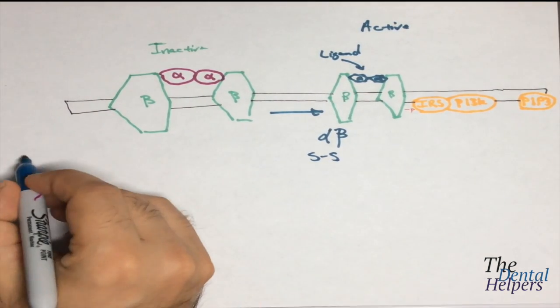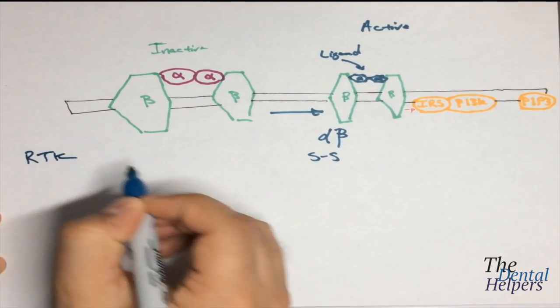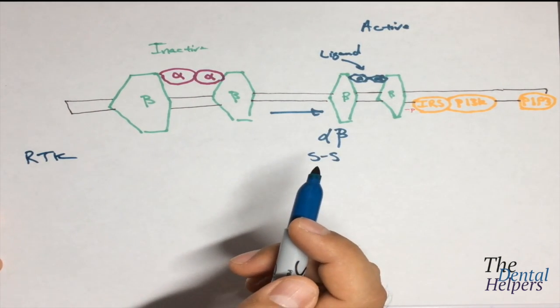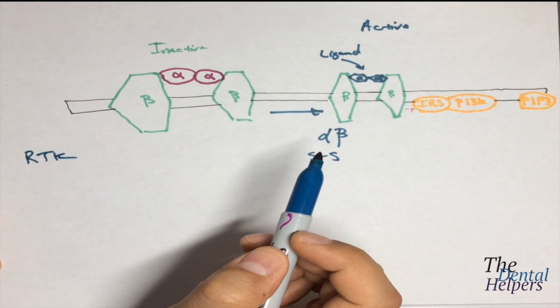So this is an example of a receptor tyrosine kinase, and it's going to regulate intracellular processes, such as glucose and energy metabolism.